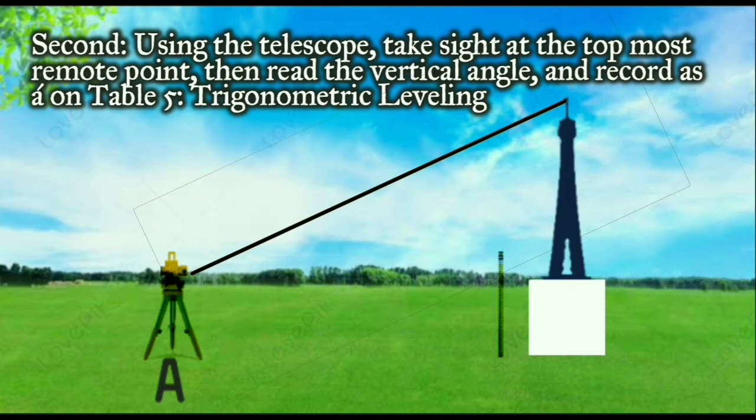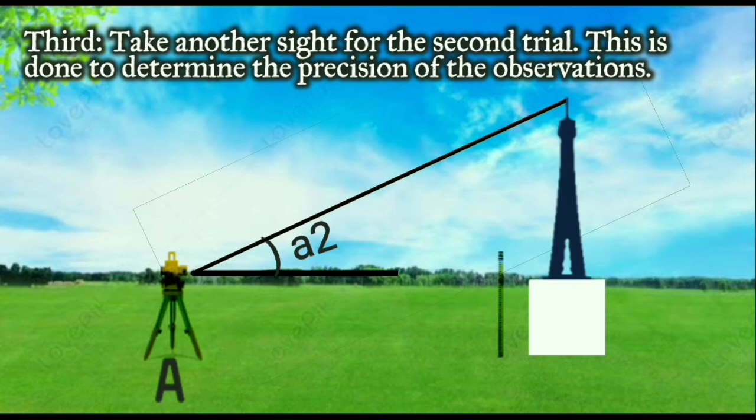Second, using the telescope, take sight at the topmost remote point, then read the vertical angle and record as A on Table 5: Trigonometric Leveling.